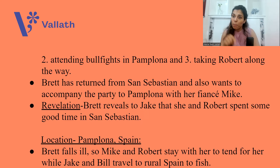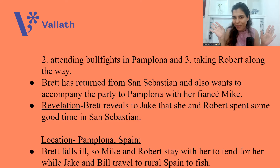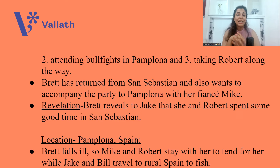Brett, who was in San Sebastian, has returned. She also wants to accompany the group to Pamplona with her fiancé Mike. Just at this time, there is a revelation: Brett reveals to Jake that she and Robert Cohn spent some intimate time together in San Sebastian. She already has a husband she has not yet divorced, a fiancé named Mike, and now she has been with Robert Cohn — all while trying to hide her feelings for the impotent Jake. Yes, it is complicated.